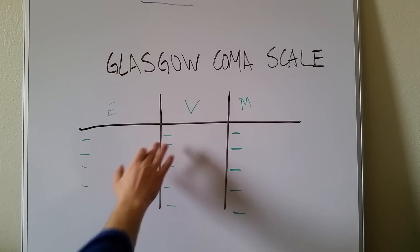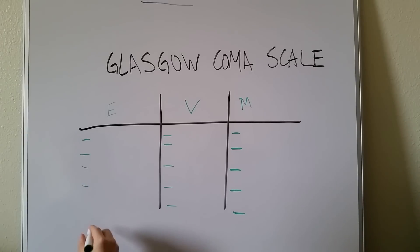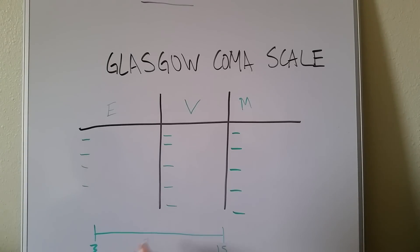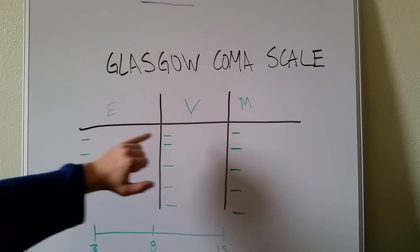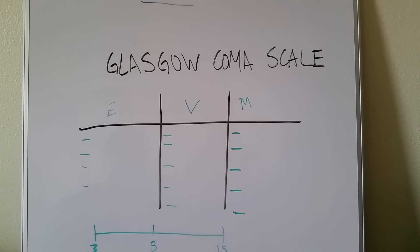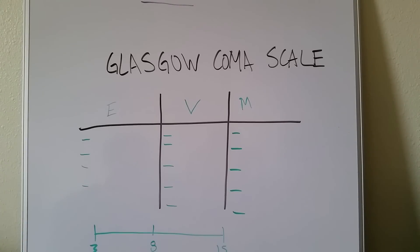There are different point values for each category, and the goal is to get a score somewhere between three and fifteen points. Three is the lowest you can go — this is a very common test question and high yield. A score of three would be a deceased person, meaning a one in each of the three categories. You cannot get a zero on the Glasgow Coma Scale; the minimum is three.